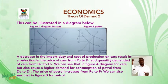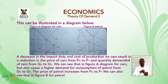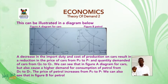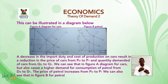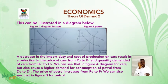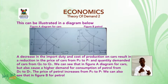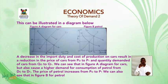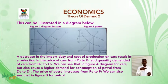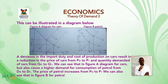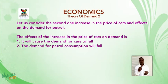Figure A shows cars, Figure B shows petrol. A decrease in import duty and cost of production on cars results in a reduction in the price of cars from P0 to P1, and the quantity demanded of cars increases from Q0 to Q1. This also causes a higher demand for petrol consumption, from D0 to D1, and the price of petrol increases from P0 to P1, as shown in Figure B.